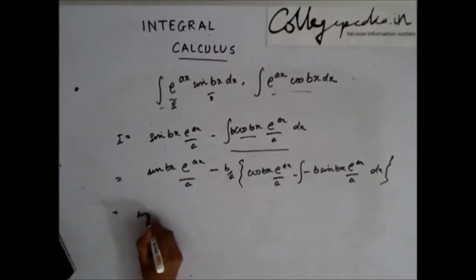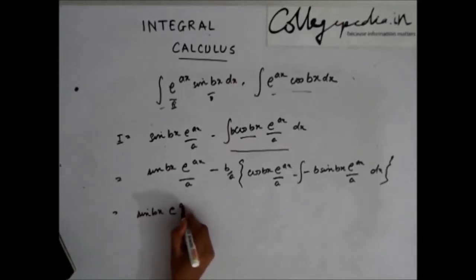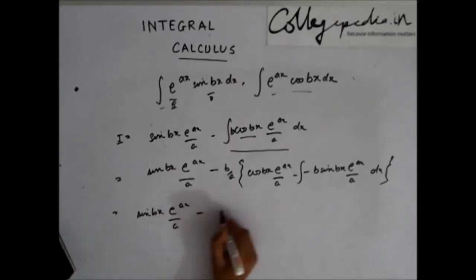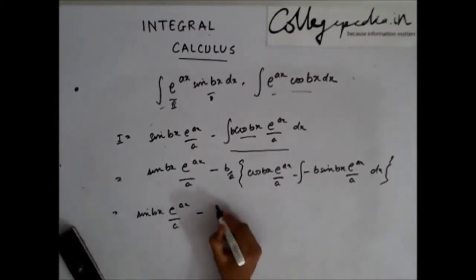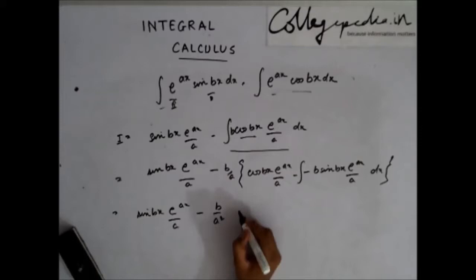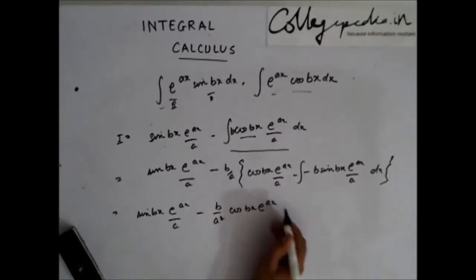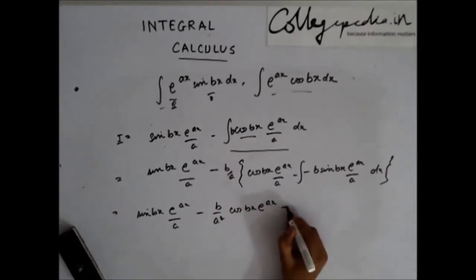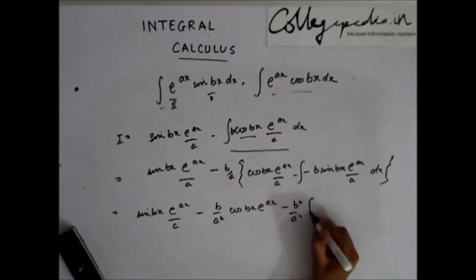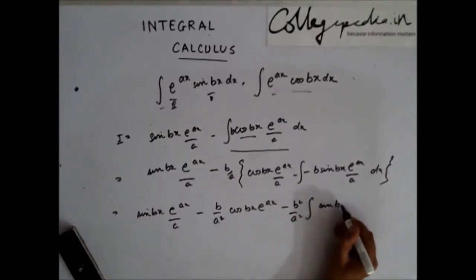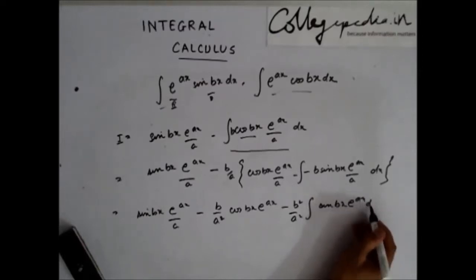Let's simplify this: sin(bx)·e^(ax)/a minus b/a squared times cos(bx)·e^(ax)/a minus b²/a² times the integration of sin(bx)·e^(ax) dx.